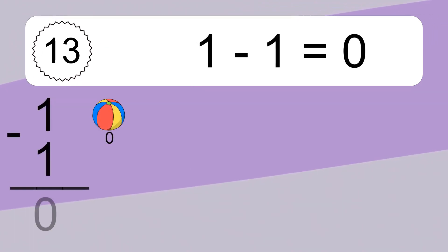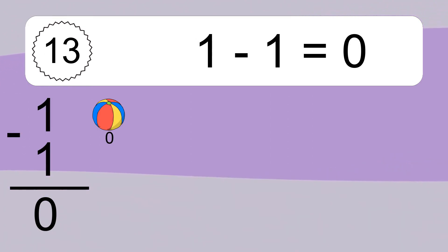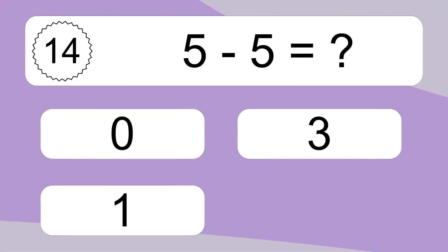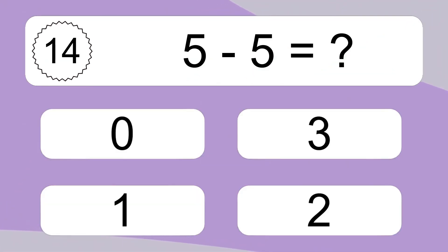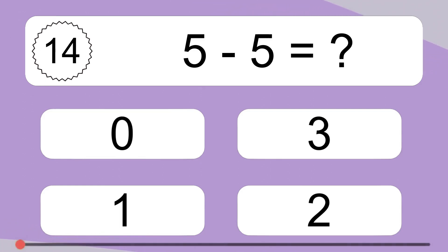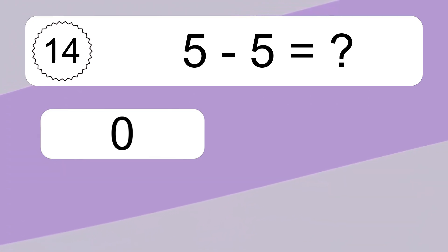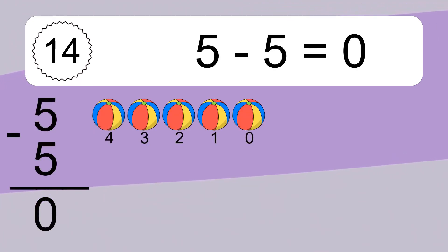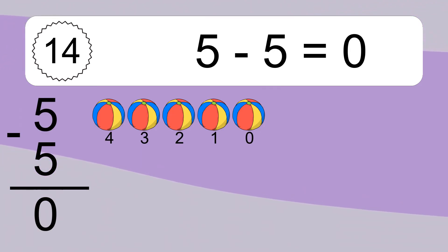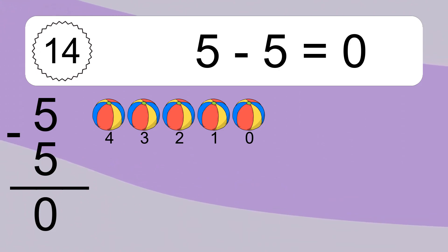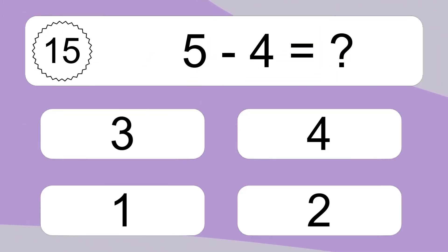1 minus 1 equals what? 1 minus 1 equals 0. Let's count it: 0. 5 minus 5 equals what? 5 minus 5 equals 0. Let's count it: 4, 3, 2, 1, 0.